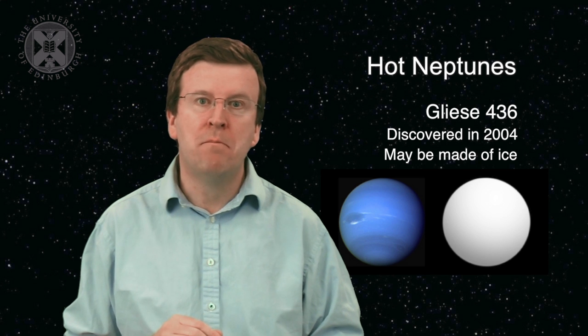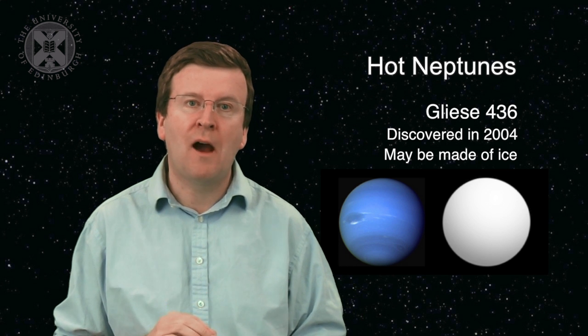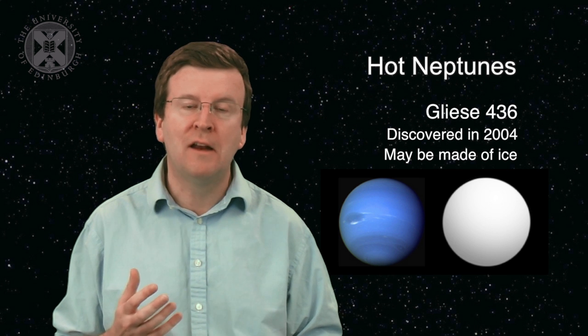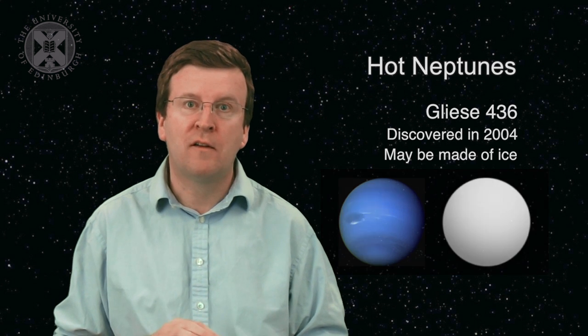It's thought that this planet may be made of ice, but that doesn't really account for its radius. It could be a super-Earth, a giant rocky planet, but have layers of hydrogen and helium which would account for its density.